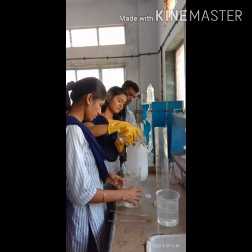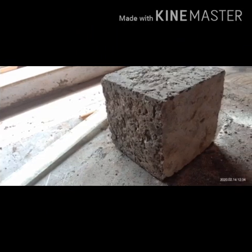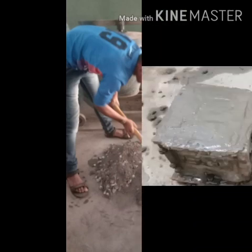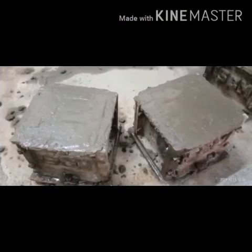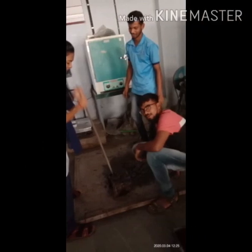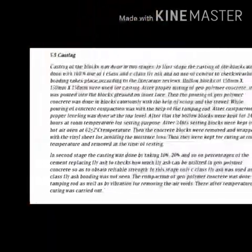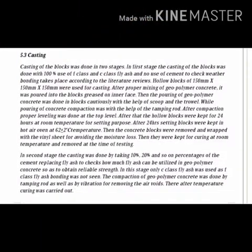The wrapped blocks were kept for curing at room temperature and removed at the time of testing. In the second stage, casting was done by taking 100 percent, 20 percent, and so on varying percentages of cement-replacing fly ash, to check how much fly ash can be utilized in geopolymer concrete to obtain reliable strength. In this stage, only C-class fly ash was used, as F-class fly ash bonding was not observed.